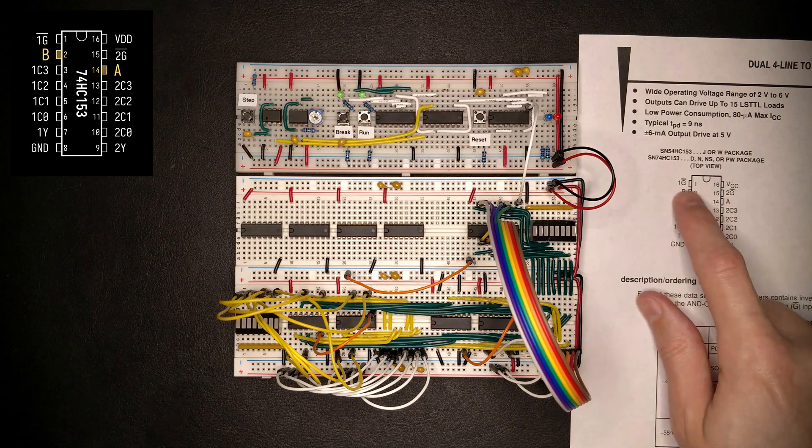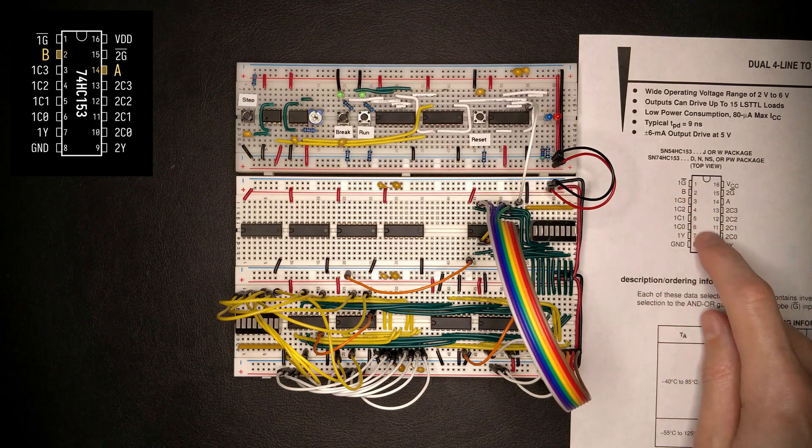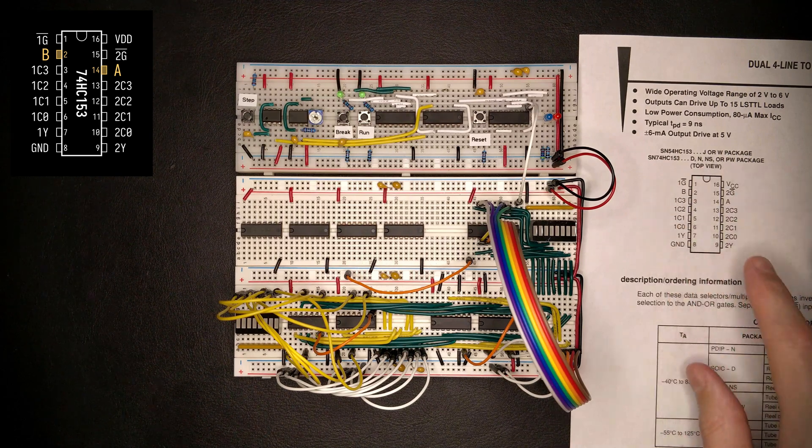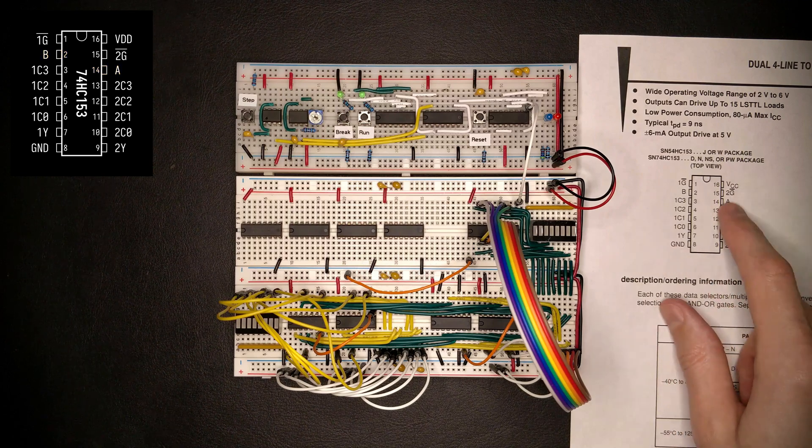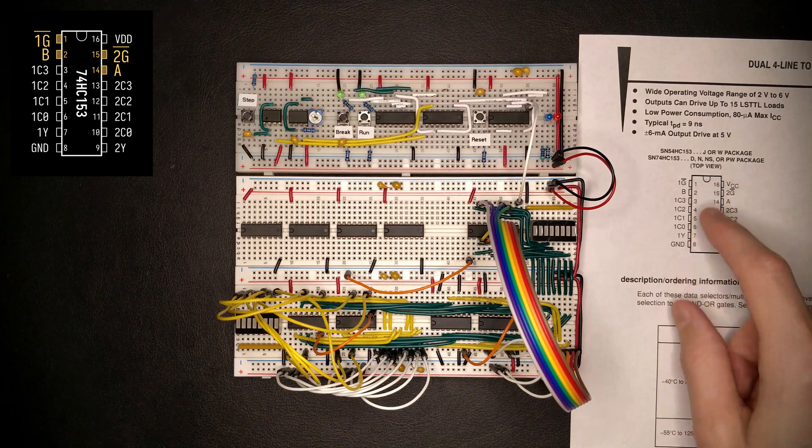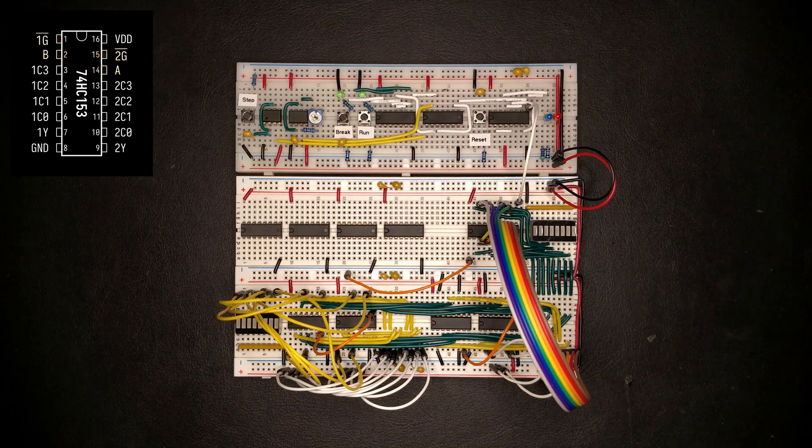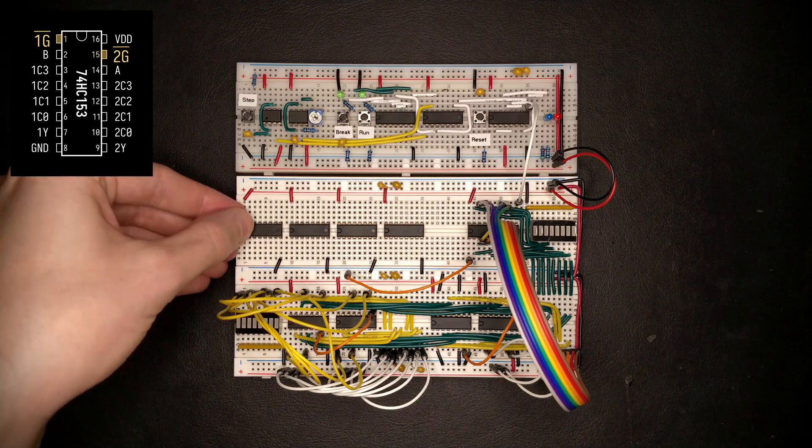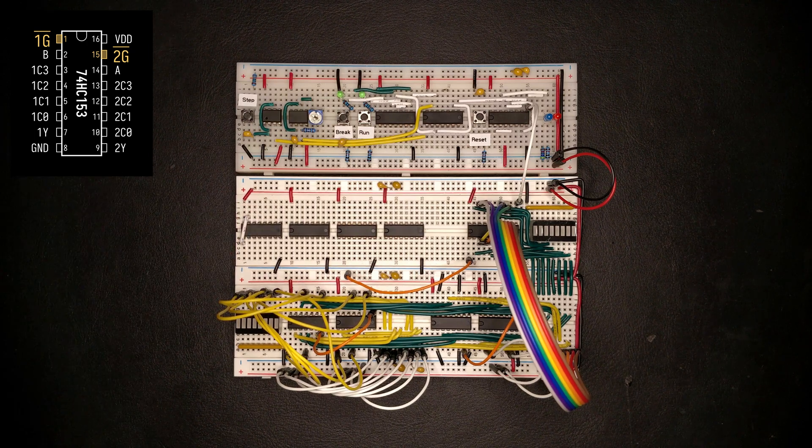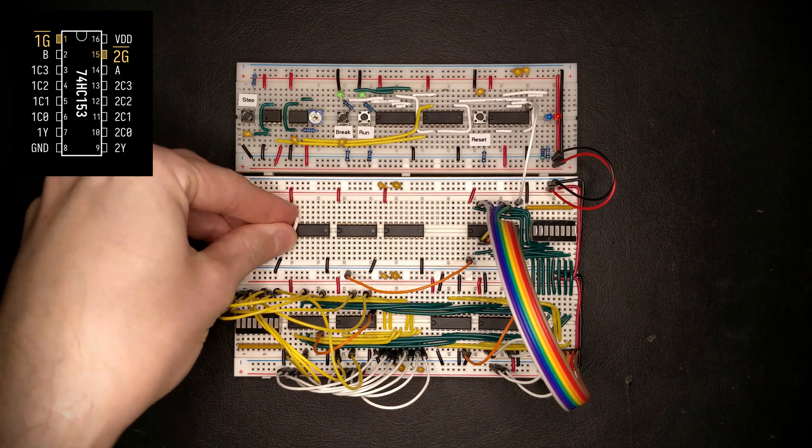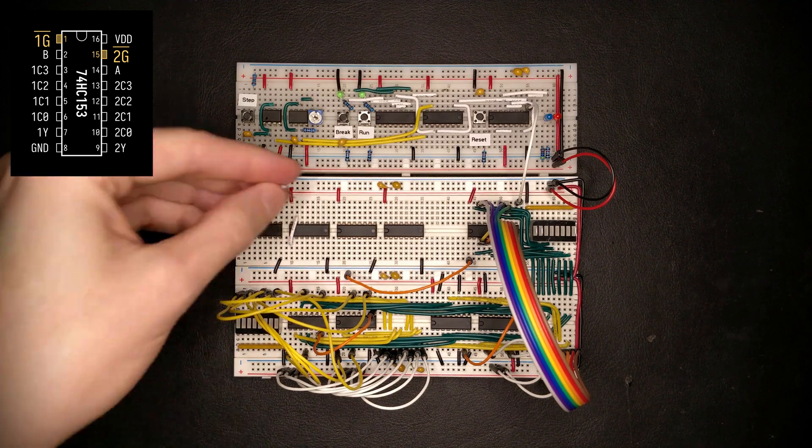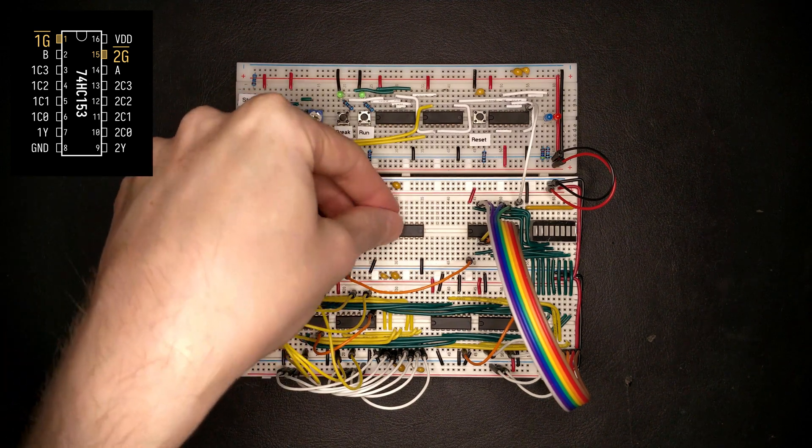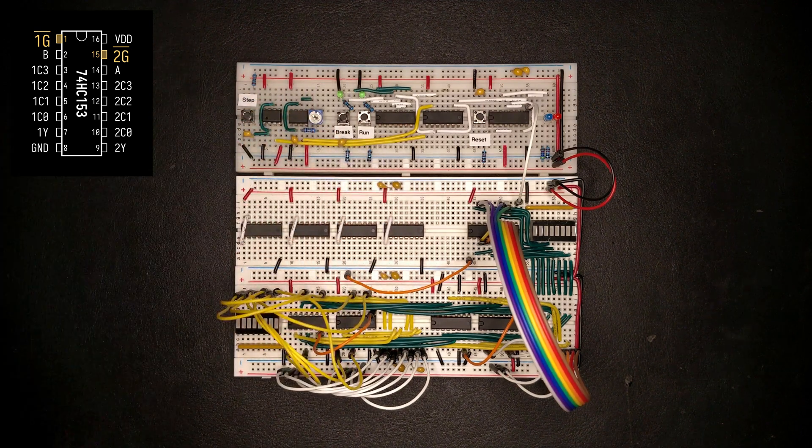But also these A and B inputs, which are essentially selecting which ones of the inputs is actually being fed through to the output. And since we have four of the chips and we want them to all behave the same way, we have to connect all the A, B and G inputs together of all the chips. So let me do that. First, the enable inputs for the two multiplexers in each chip.